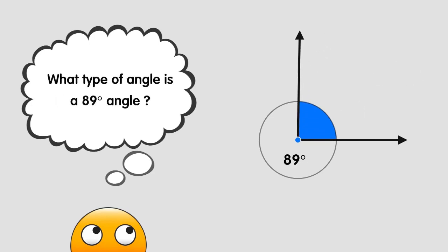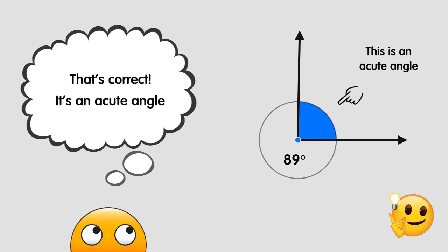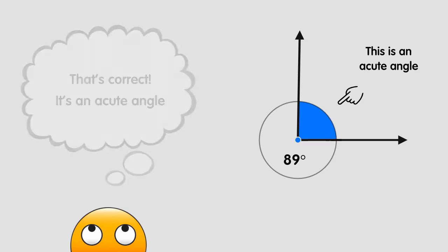What type of angle is a 89 degree angle? That's correct, the answer is an acute angle.